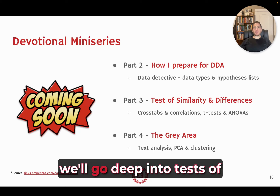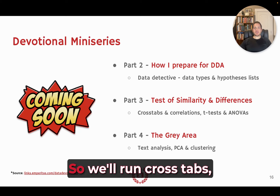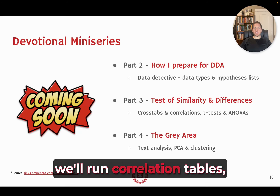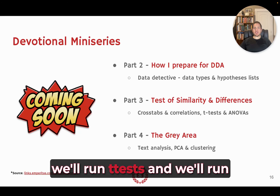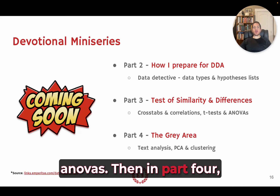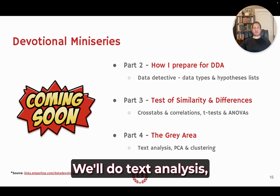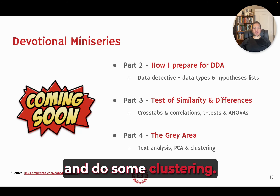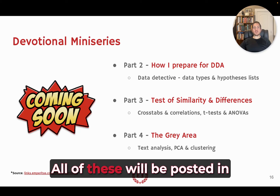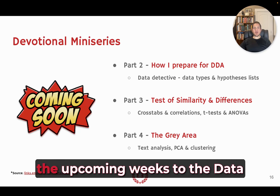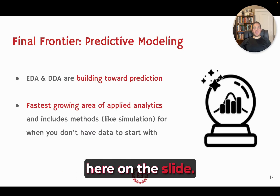In part three, we'll go deep into tests of similarity and tests of difference — running crosstabs, correlation tables, t-tests, and ANOVAs. Then in part four, we'll cover the gray area tests: text analysis, dimension reduction, and clustering. All of these will be posted in the upcoming weeks to the data devotional playlist linked on the slide.